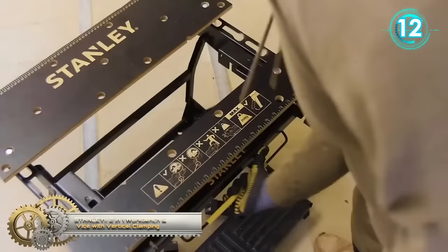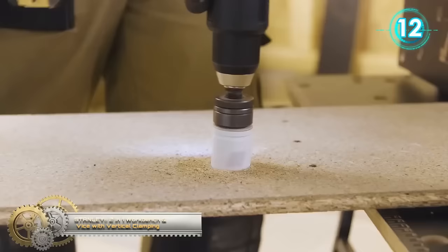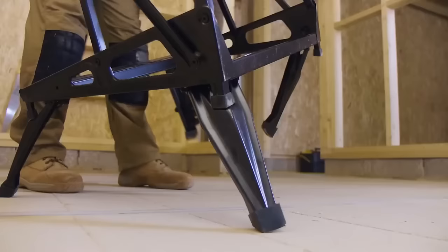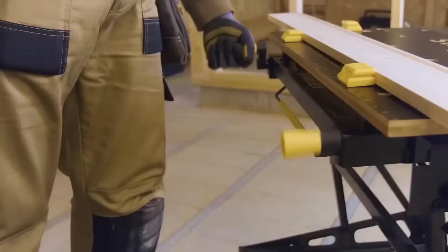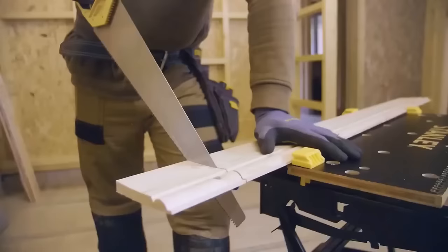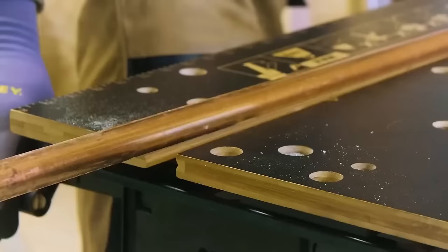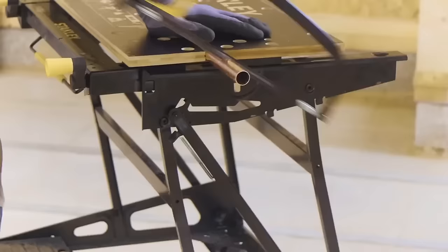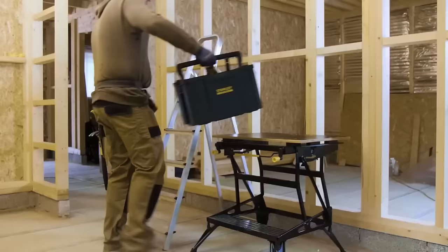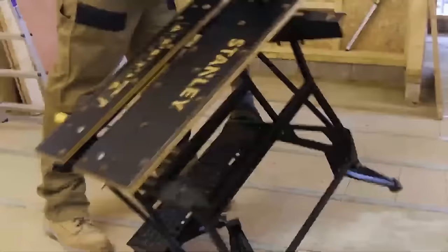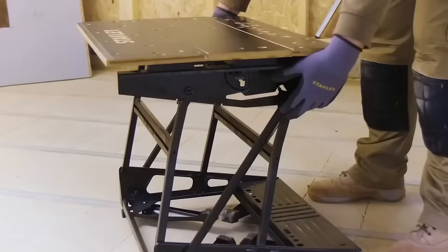The Stanley 2-in-1 workbench and vice with vertical clamping is a versatile and robust tool suitable for woodworking, metalworking, and various DIY projects. Its sturdy steel frame, coated with a durable powder finish coupled with a dependable solid wood top, ensures a stable and resilient work surface. Effortless conversion transforms it into a vice with a 4-inch jaw width and 3-inch jaw depth that rotates 360 degrees for vertical clamping. Additional features include a built-in shelf for efficient tool and supply storage, a pegboard backboard for convenient tool organization, a quick release system for hassle-free folding and storage, and a carrying handle for portability.